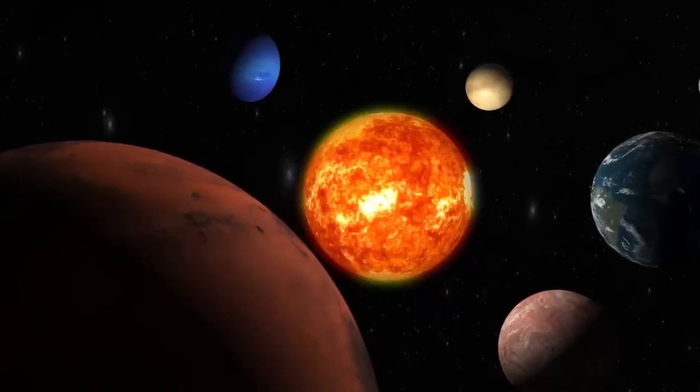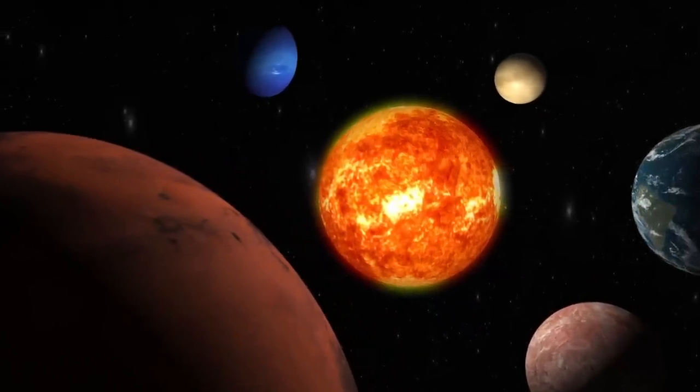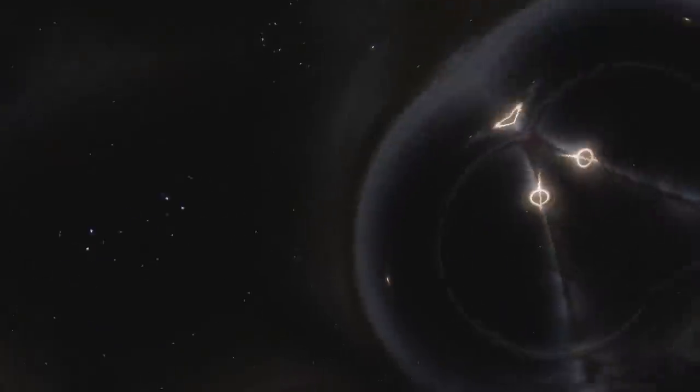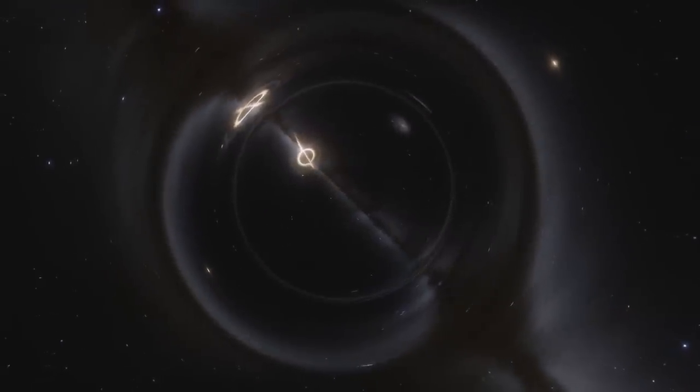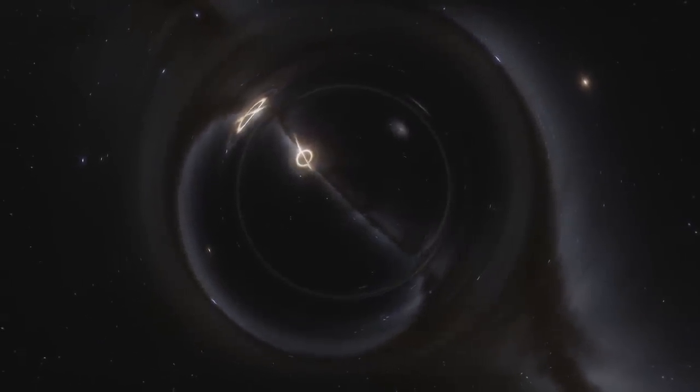The universe is filled with a variety of celestial objects, ranging from planets and stars to dust and gas. But there are also dark regions that we cannot see, such as black holes.